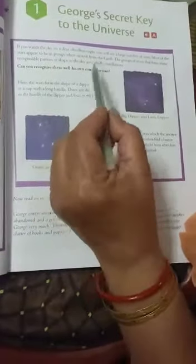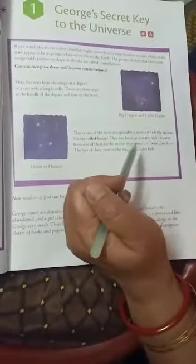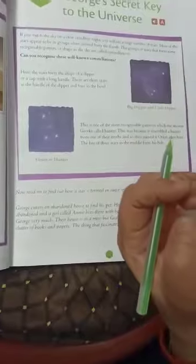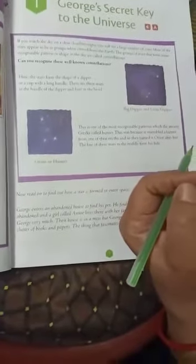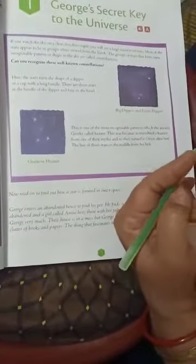Most of the stars appear to be in groups when viewed from the earth. The groups of stars that form some recognizable pattern or shape in the sky are called constellations. And whenever you look up during night, what do you see? Stars. They appear in groups. You can see so many stars in clusters or in groups. You can view from the earth to the sky when the sky is very clear.